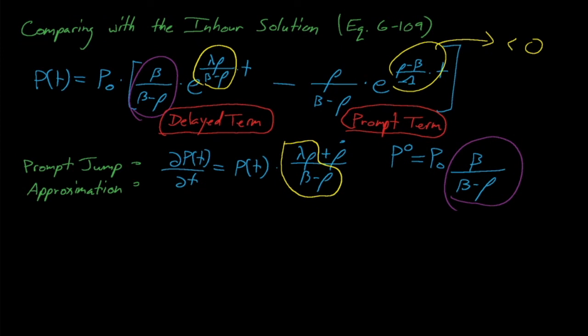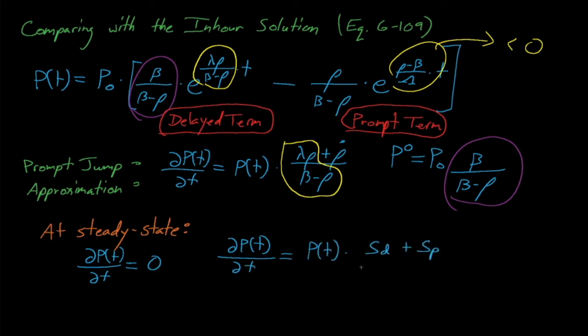It's also worth noting that our prompt jump approximation's differential equation for the power tells us something significant about the reactor's behavior. It contains one term that represents the prevailing behavior from delayed neutrons — S sub D, the source of delayed neutrons — and one term, which is the reactivity derivative term, that represents the immediate multiplication of prompt neutrons after a reactivity insertion, which is S sub P for the prompt term. One interesting consequence of this equation deals with the steady state condition of power reactors. For a reactor to stay at steady state power, the dP function must be equal to zero. We know that the S sub D term is not equal to zero for a steady state reactor, so this means that the S sub P term must remain negative for the reactor to stay at steady state.